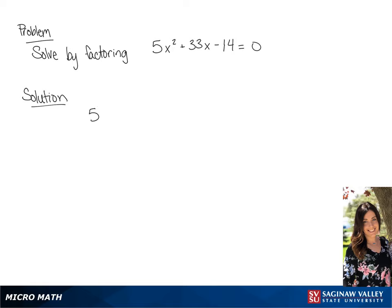We want to factor 5x squared plus 33x minus 14 equals 0. We're going to split this into two binomials.